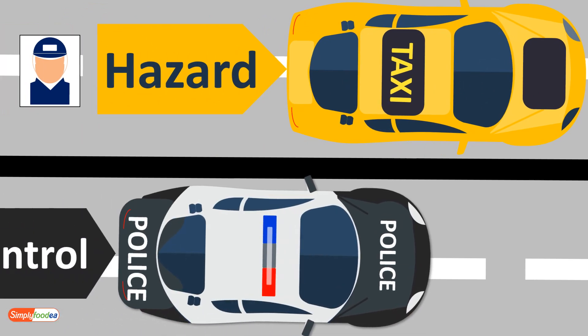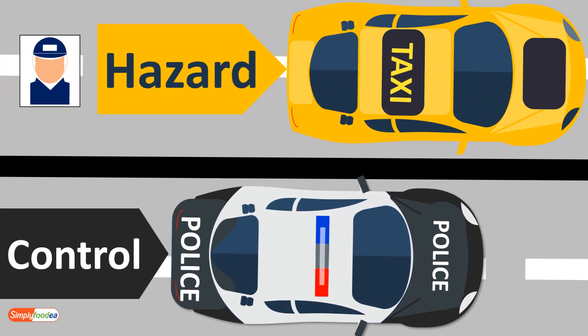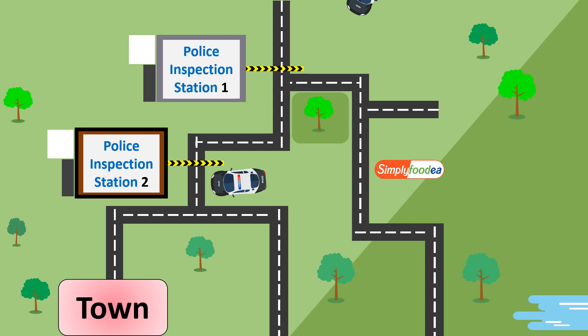Let's take a small example — like the taxi and the police. The taxi represents the process, the hazard is a thief in the taxi, and the police are the control for this hazard. There is a town and a road with two police stations: police station number one and police station inspection number two. We'll examine how the hazard wants to continue from one point to the town, and there will be a control. To identify the hazard, there are four questions: number one, number two, number three, and number four.